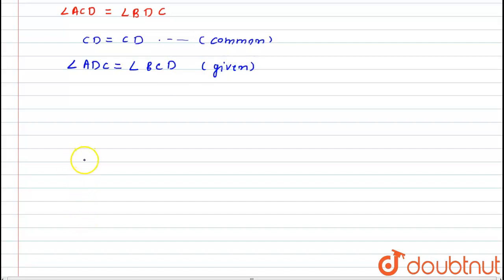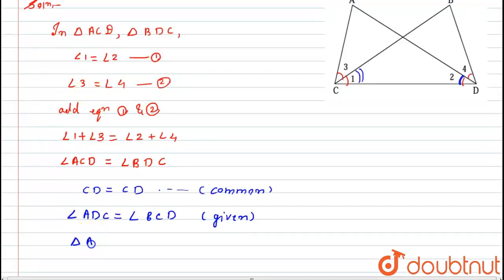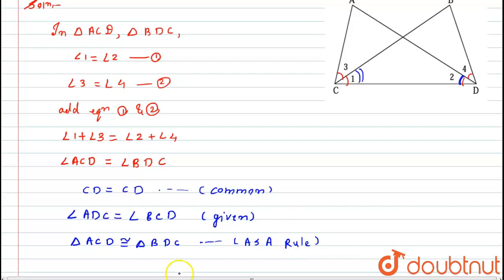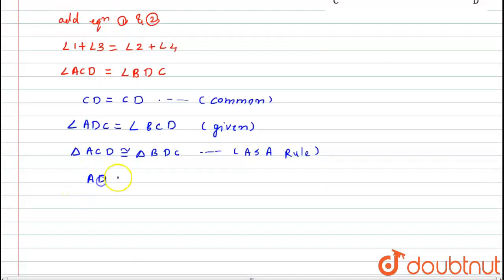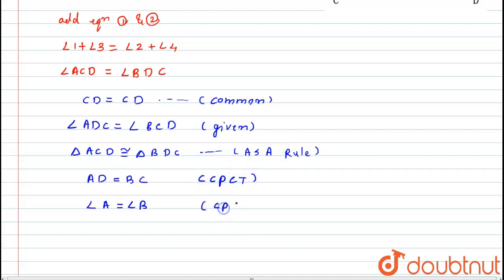From these three arguments, I can say that triangle ACD is congruent to triangle BDC, and this is because of the Angle-Side-Angle (ASA) rule. Now, as we know that if two triangles are congruent, their corresponding parts are equal. Hence AD is equal to BC and angle A is equal to angle B — this is because of the corresponding parts of congruent triangles (CPCT).